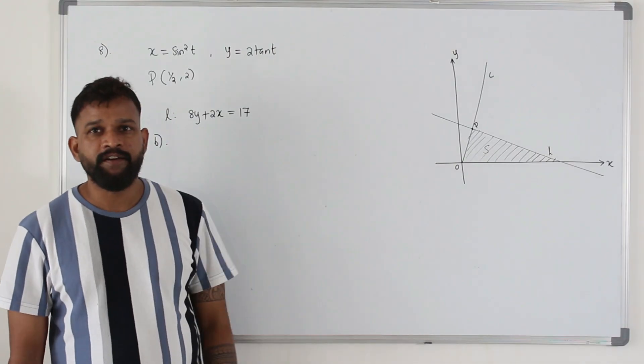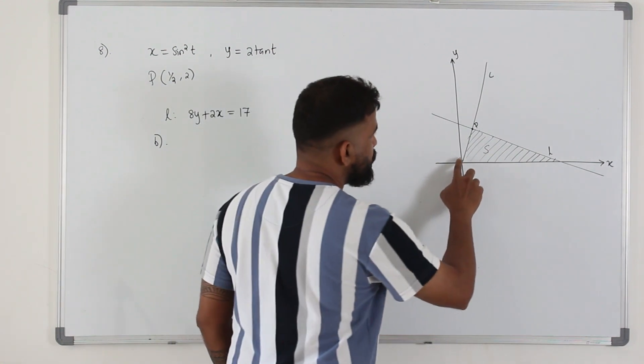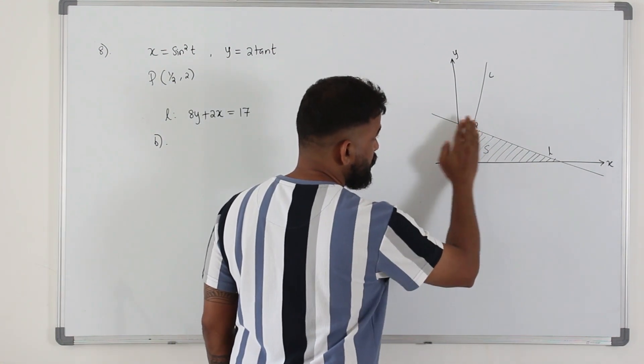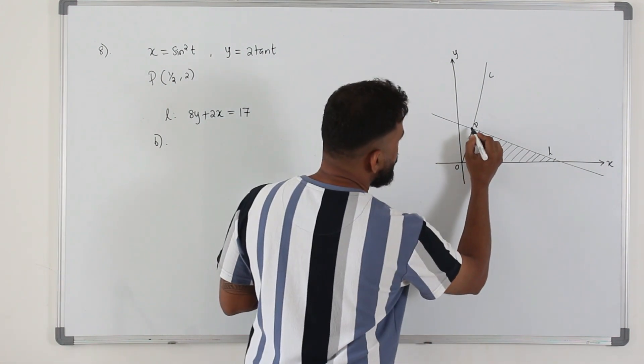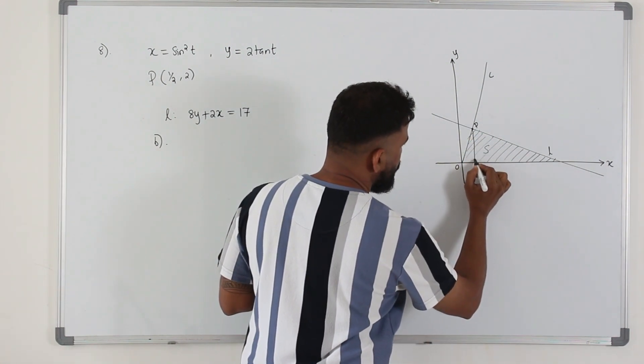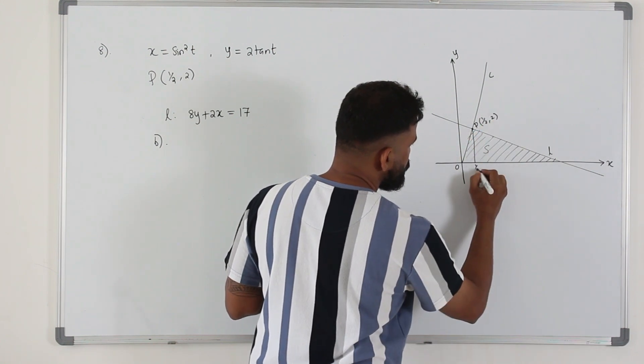We are going to find this shaded region. So there are several ways you can calculate this. You can find the total area of this triangle minus this little area. Or you can divide this. You draw a line here. We know the x-coordinate of this point is half, y-coordinate is 2. So this is half.